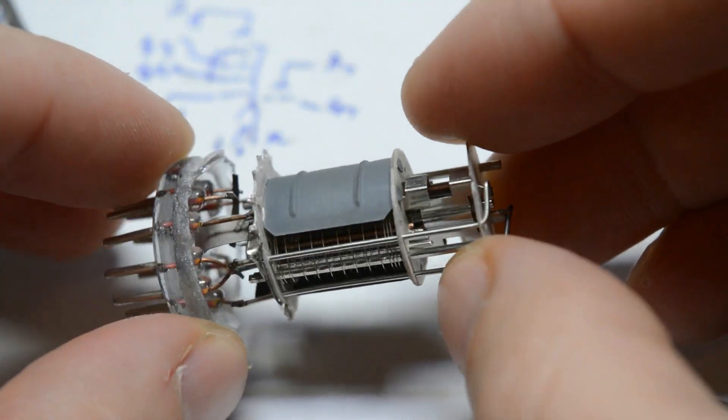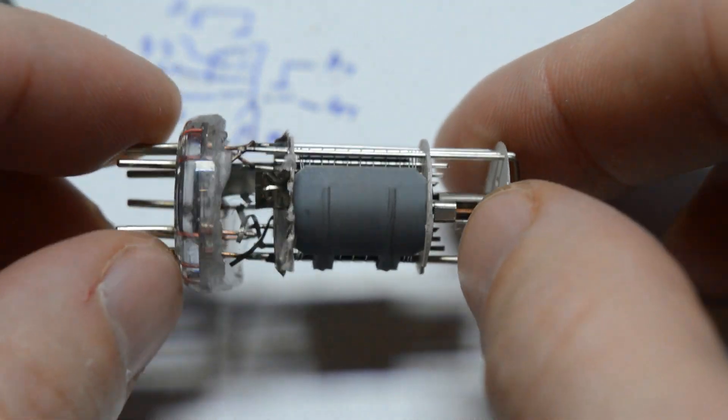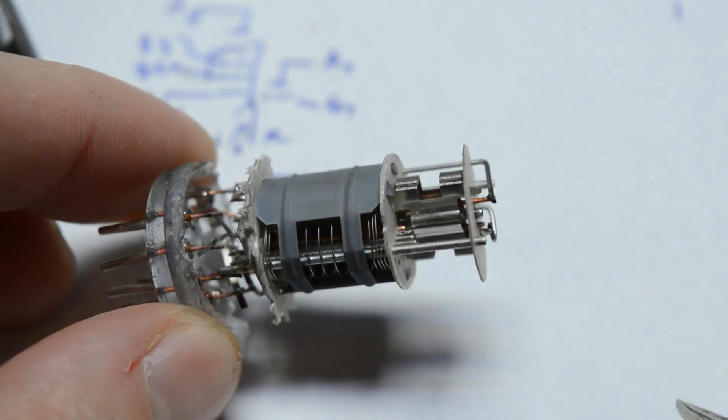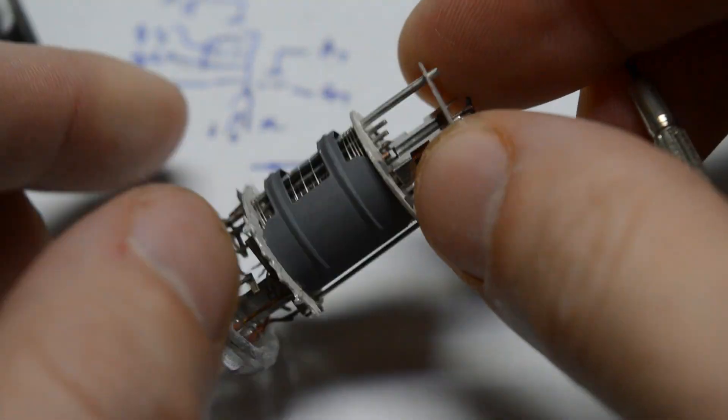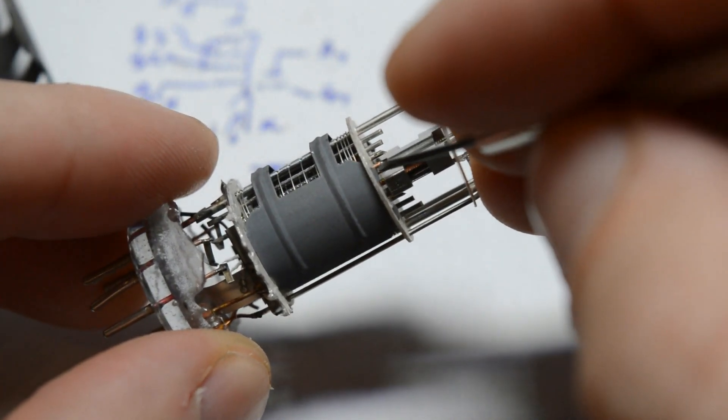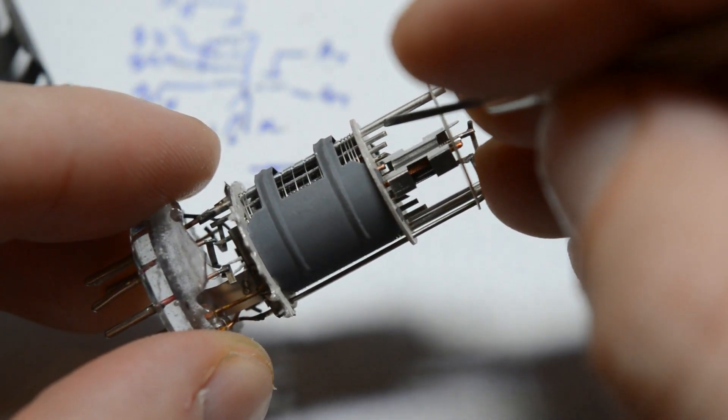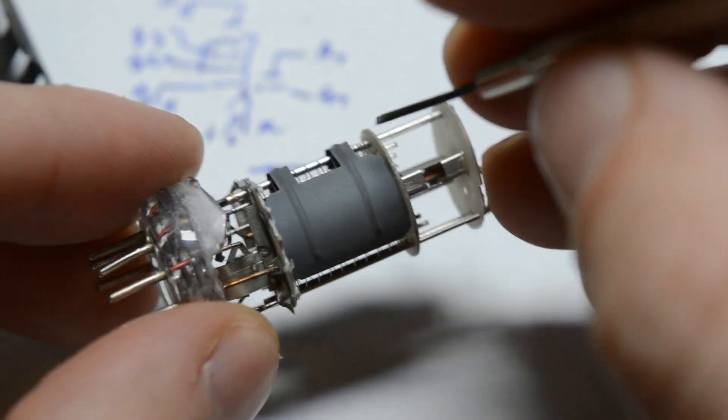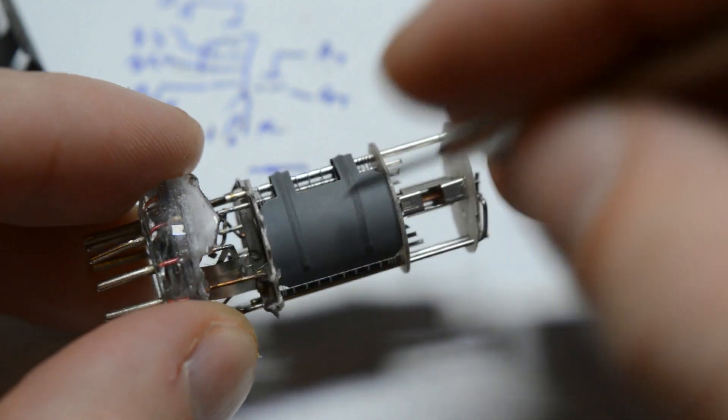So now we can clearly see the internal structure of the heptode as well as the triode. So on the heptode we have five grids, which we can see laid out. We have the first grid, copper, and then the next four ones. The fourth being also connected to ground. And then this outer shield is the anode.